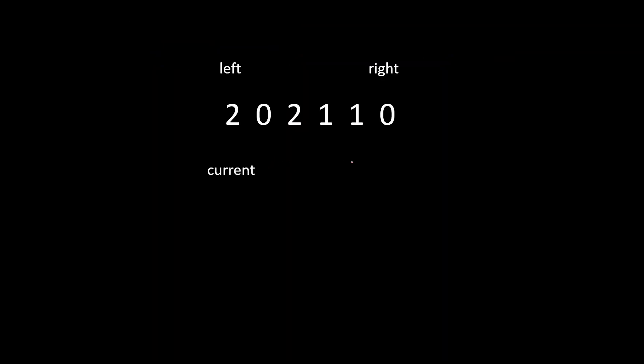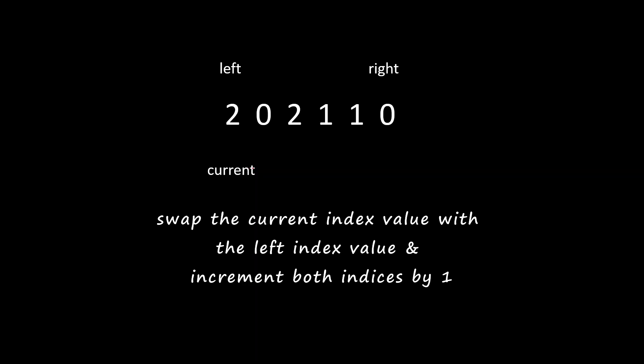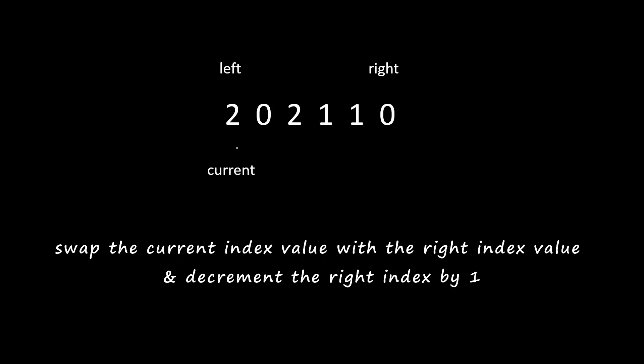Now let's walk through the algorithm on the example. We initialize: left and current pointers at the very first index, right pointer at the very last index. The current pointer is used for comparison each iteration. If current pointer value is greater than right pointer index, we terminate the loop. If we encounter 0, we swap the current and left pointer values, then increment both left and current pointers. If we encounter 2, we swap the current and right pointer values.